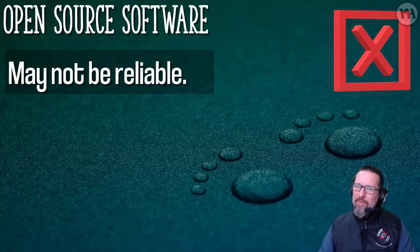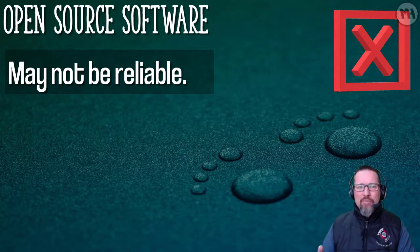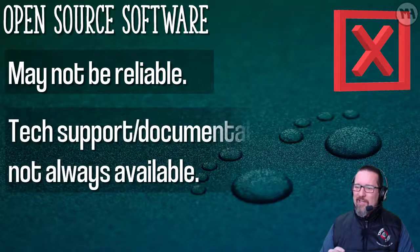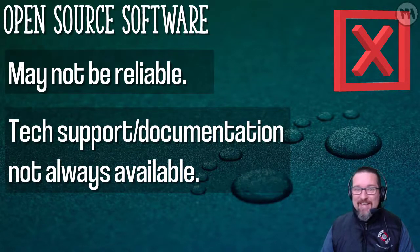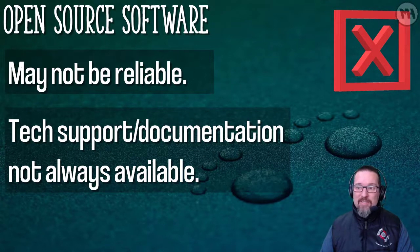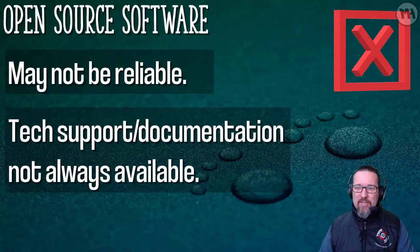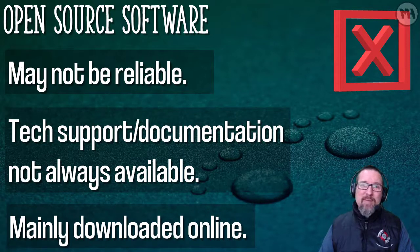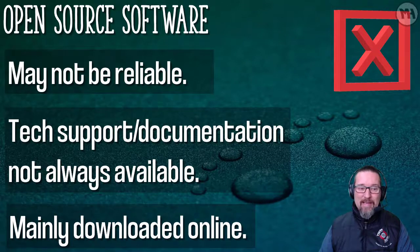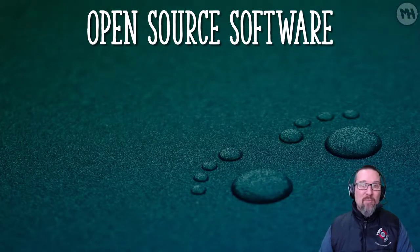A couple of downsides of open source software: it may not be reliable, since it's not a commercial product being maintained professionally for profit, so there may be some glitches and bugs. Tech support and documentation may not always be available — it can be tricky to get help or find the right documentation. Also, it has to be downloaded online; you can't just buy it at a shop. You need internet access and storage space on your computer.